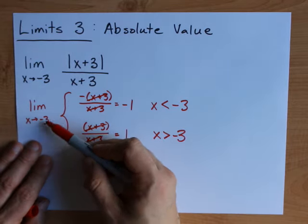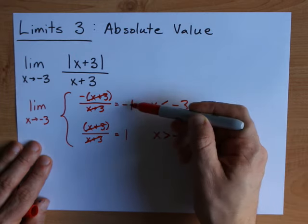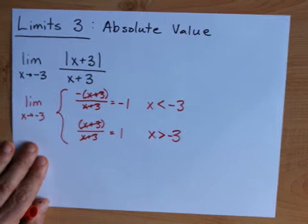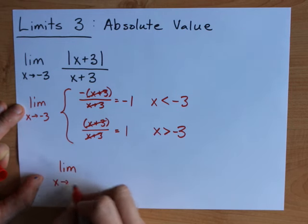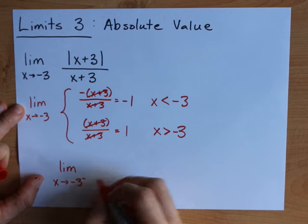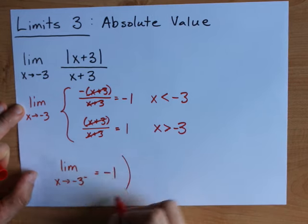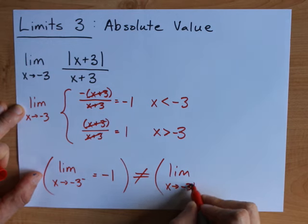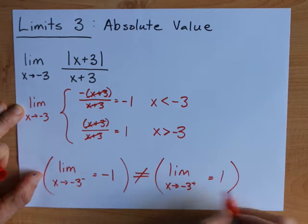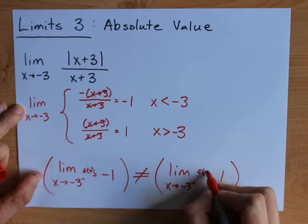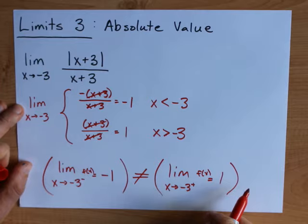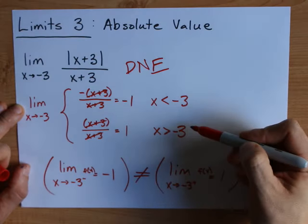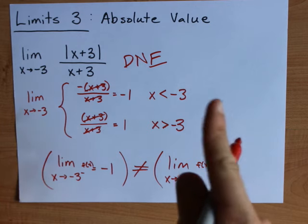And so the limit as x approaches negative three from the left is negative one, and the limit as x approaches negative three from the right is positive one. What I'm going to do here is write that in math: the limit as x approaches negative three from the left is negative one, which is not the same as the limit as x approaches negative three from the right, which is positive one. Now I probably should have written like an f of x in here so that we said we were taking the limit of, but the point is that they are not the same. So the original limit does not exist. It's a jump discontinuity at x equals minus three, and there is no double-sided limit.